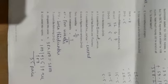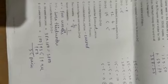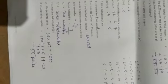Convert 38 rupees into paisa: 38 × 100 = 3800 paisa. Convert 435 paisa into rupees: divide 435 by 100 = 4 rupees 35 paisa.